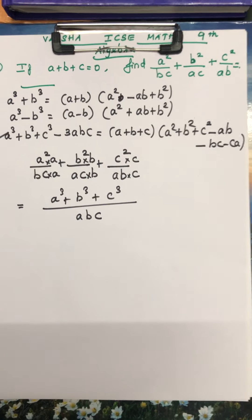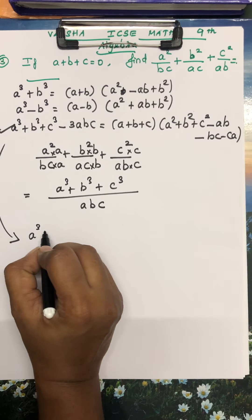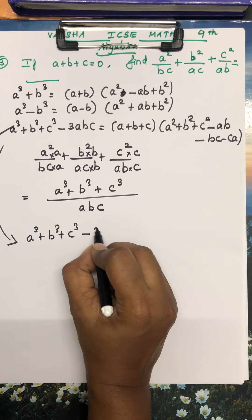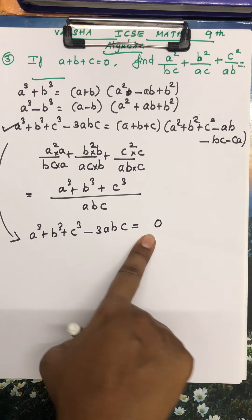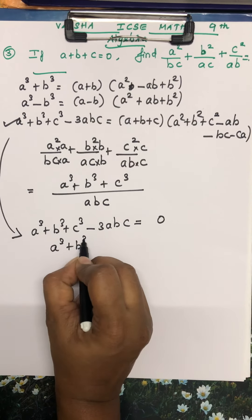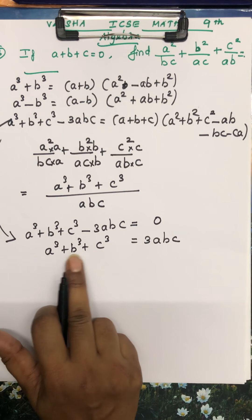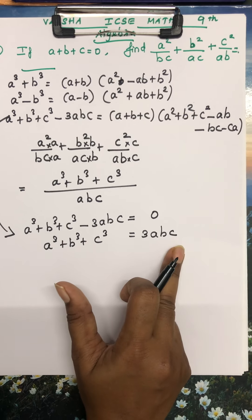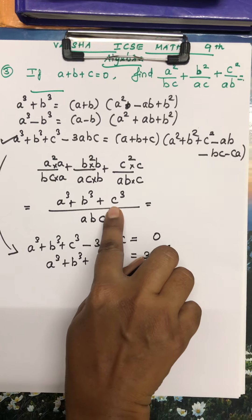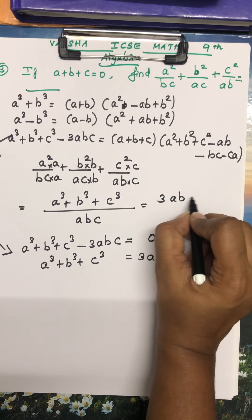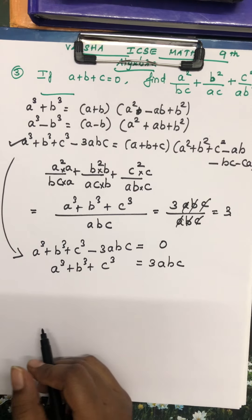So this is what we get from the sum. Now applying the identity: A cube plus B cube plus C cube minus 3ABC equals A plus B plus C times the rest. Since A plus B plus C equals 0, the RHS is 0. So A cube plus B cube plus C cube equals 3ABC. Substituting into our expression: 3ABC divided by ABC — cancel all terms — and we get the answer 3.